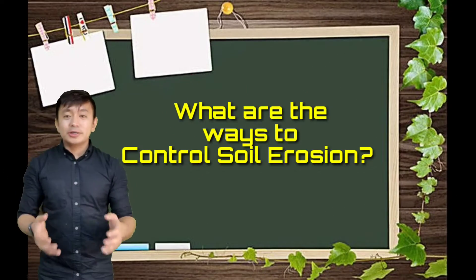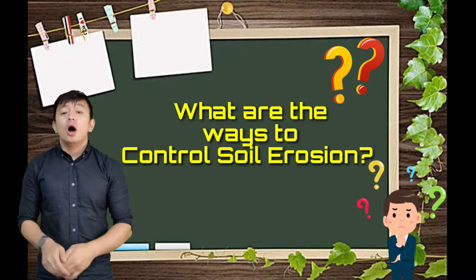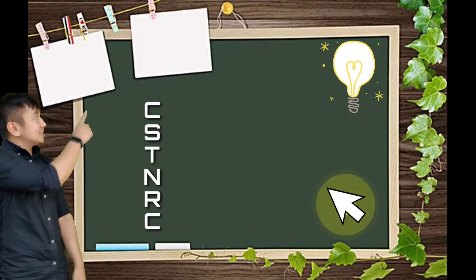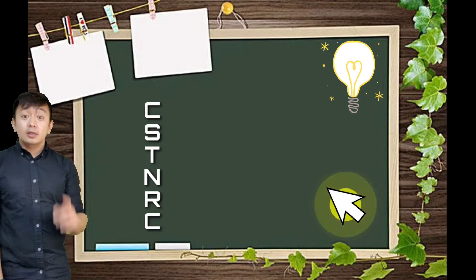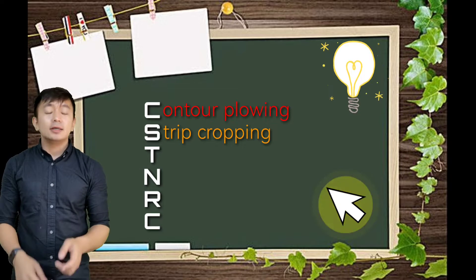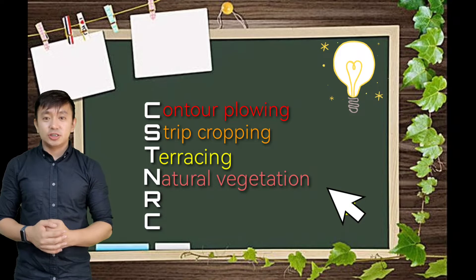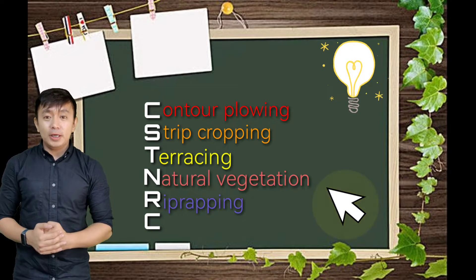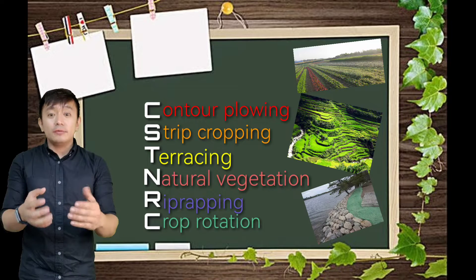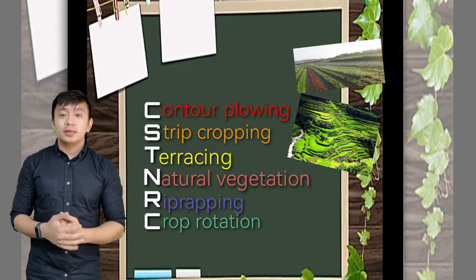So what are the different ways on how we are going to control the harmful effects of soil erosion? Remember this acronym: CESNARC. C stands for contour plowing. S, strip cropping. T, terracing. N, natural vegetation. R, rip-rapping. And C, crop rotation. Let's describe these six ways on how we are going to prevent soil erosion.